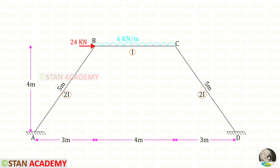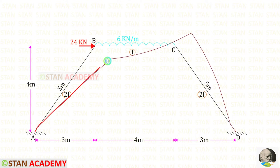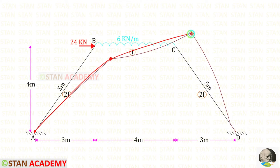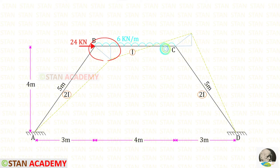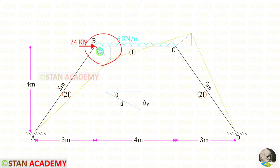Now let us see how the displacement occurs in this frame. We can make a line connecting point A to the displaced position of B, then B to C, and finally to point D. From joint B, we draw a line to a reference point and then a vertical line. Similarly from joint C. So we have made a pair of triangles. Since this is a symmetrical frame, the dimensions of both triangles will be the same.